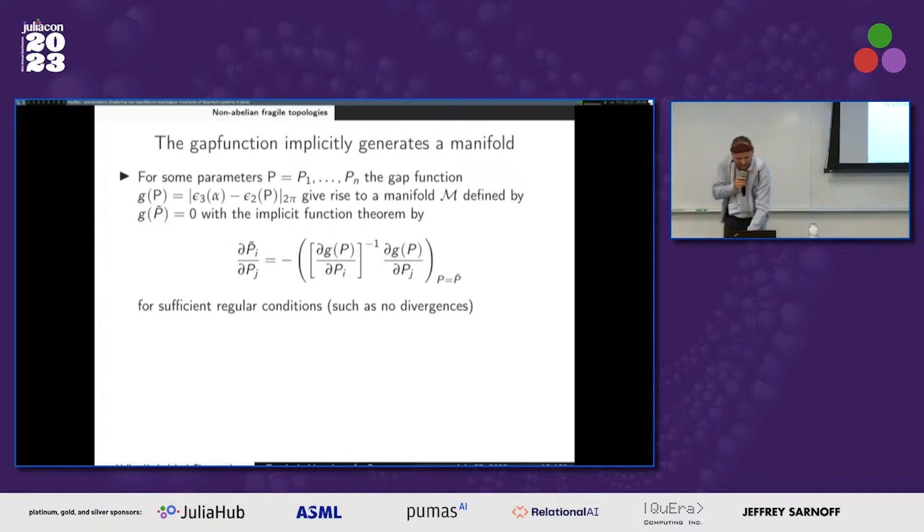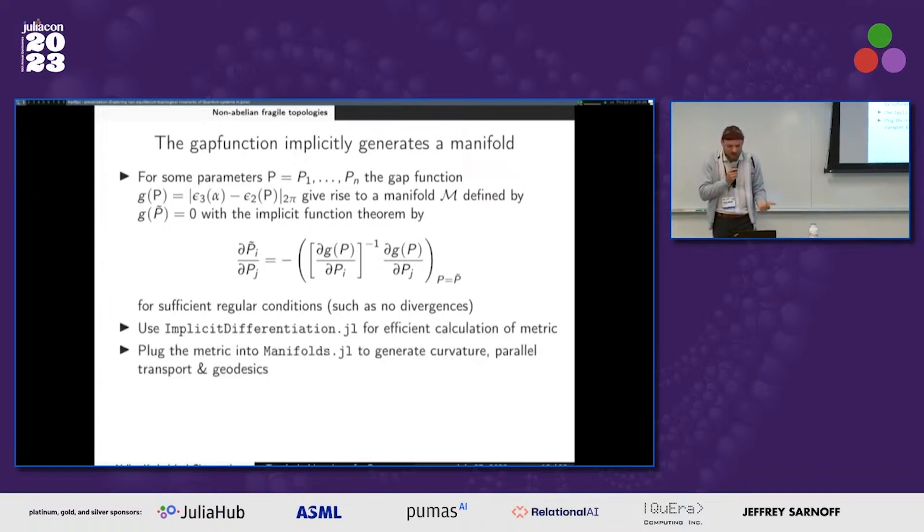And there are some libraries how to do this. That is really cool because now in the Julia ecosystem, the mathematicians already did a lot of work, and you can just build on this work. You do not need to recalculate the parallel transport and all of this. You can just use it.